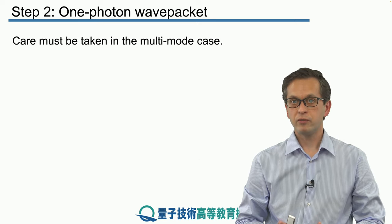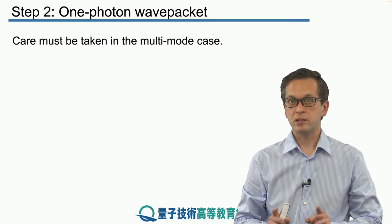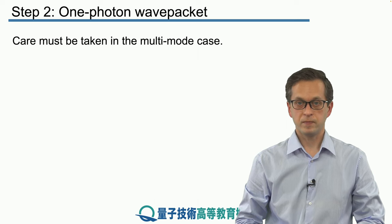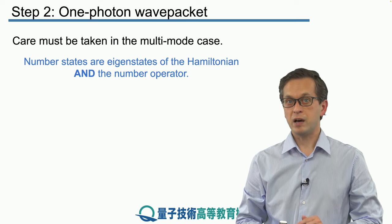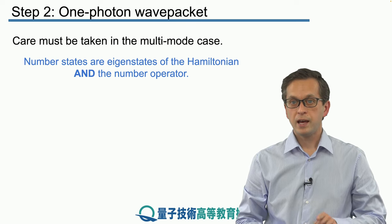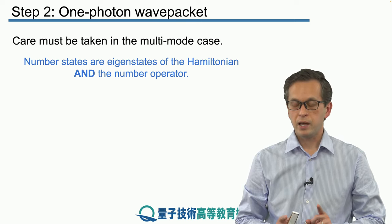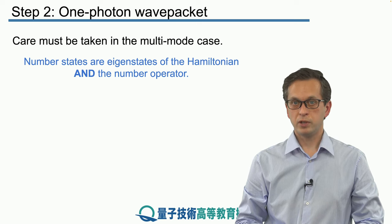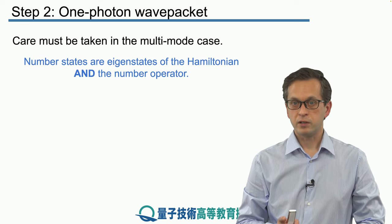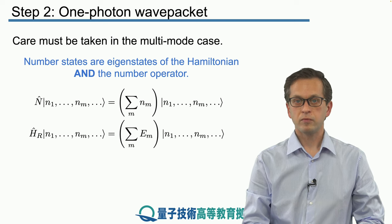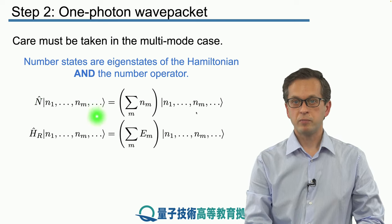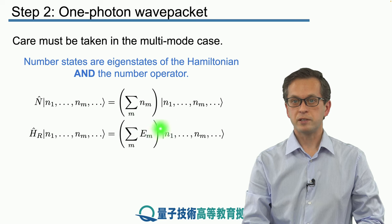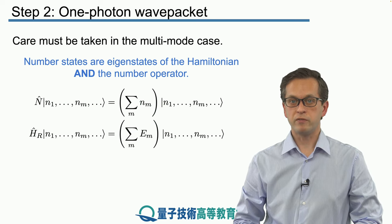Now we have to be careful when we consider number states in the multimode case. We have seen for single modes that a number state is the eigenstate of the Hamiltonian and the number operator, and this statement is true for the multimode case as well. However, there is another statement that is more nuanced. N-hat applied to the number state is given by the sum of individual N values for every mode.